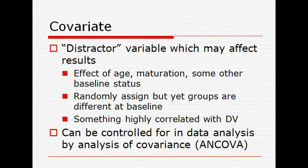When you randomly assign subjects to conditions, that should equalize things so you have the same number of men and women, approximately the same mean age in each group, and so on. But sometimes that may not happen — you may have randomly assigned subjects, but one group ends up older than the other, or one group has more men than women. So sometimes we have to control for that in the analysis, especially when something is highly correlated with your dependent variable. We may or may not need to look at covariates in your own data — it's probably unlikely, but you may see this in the literature.